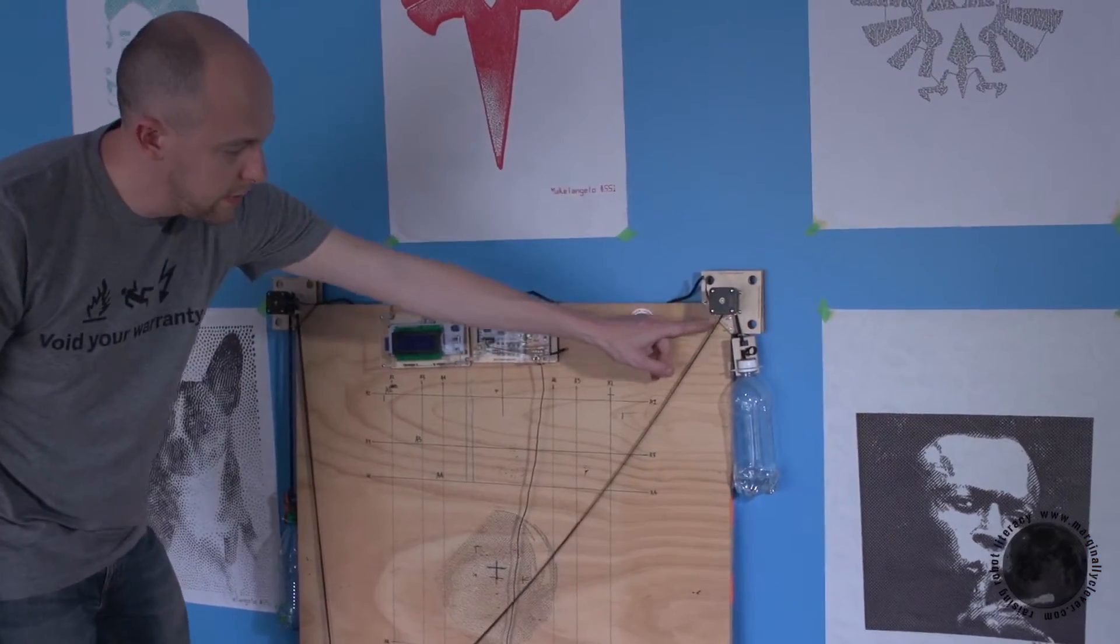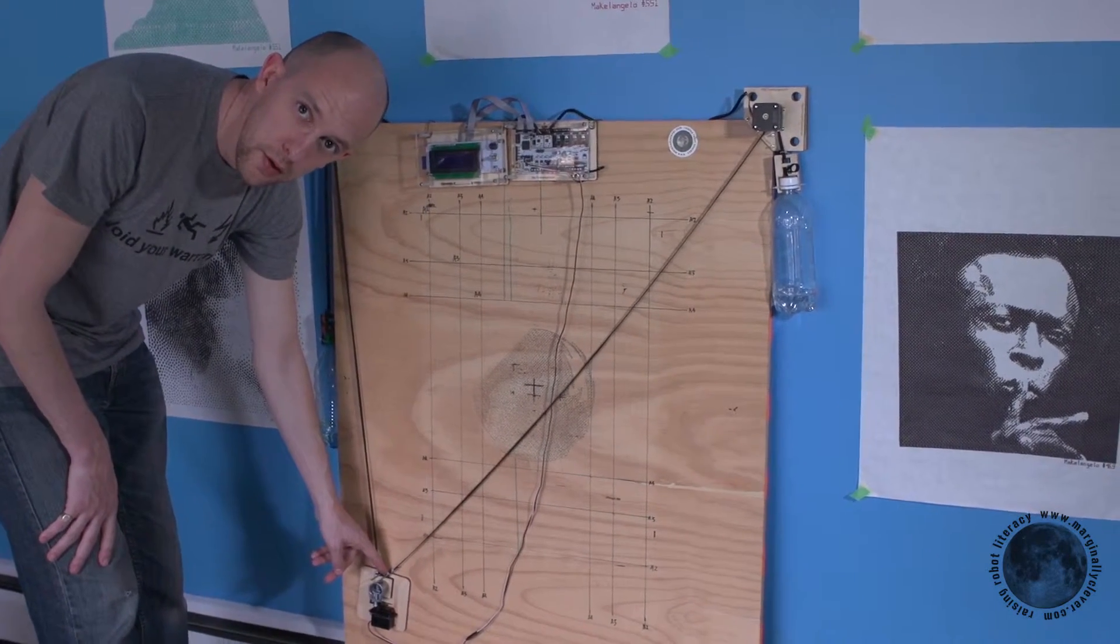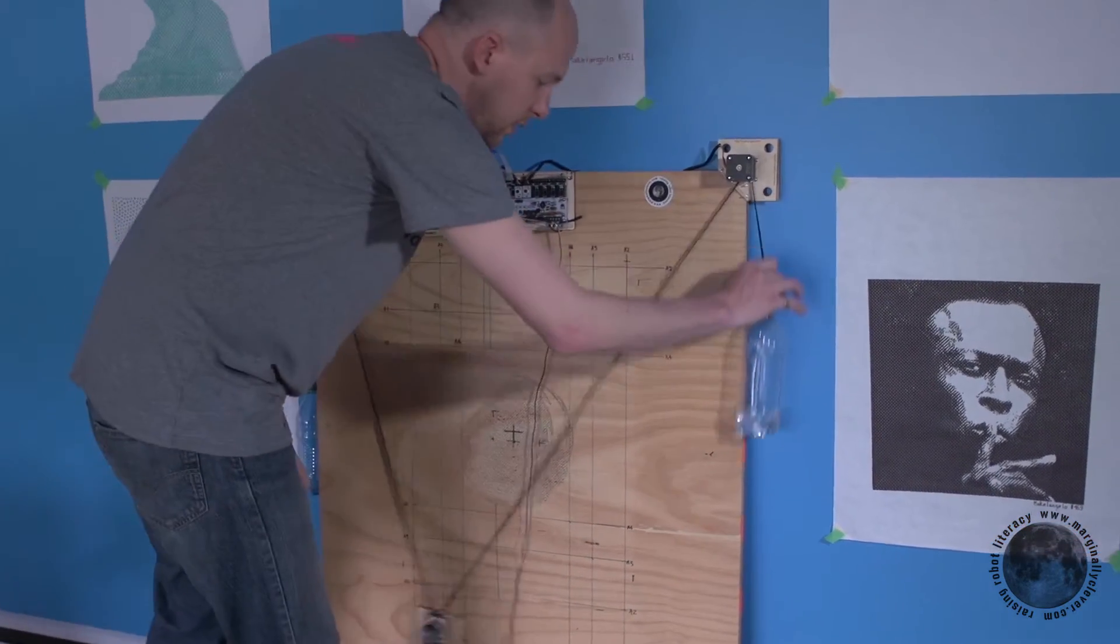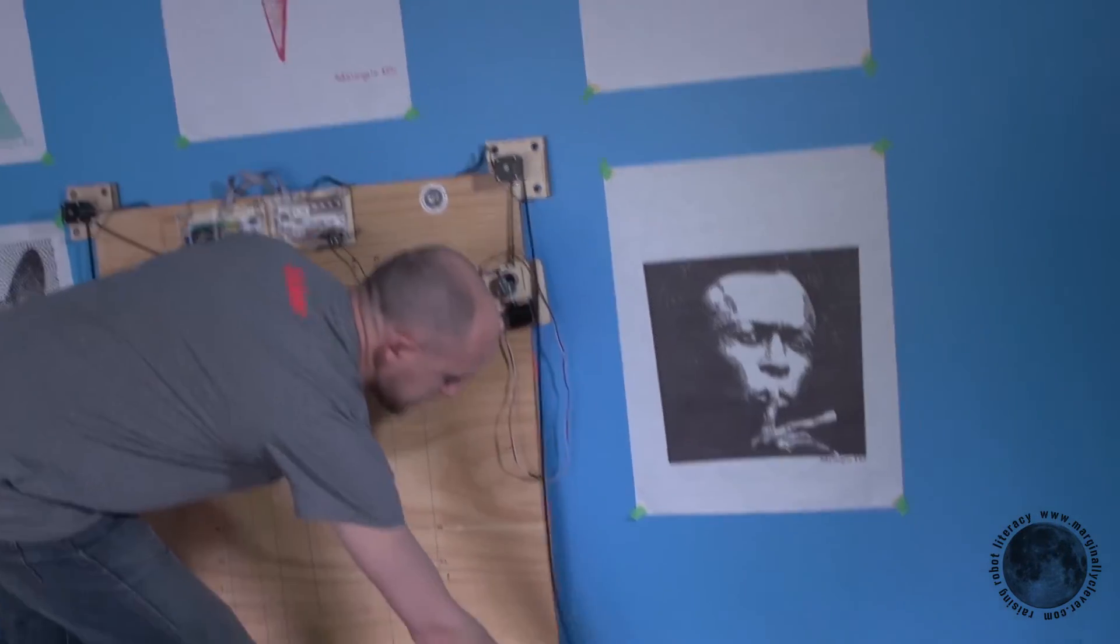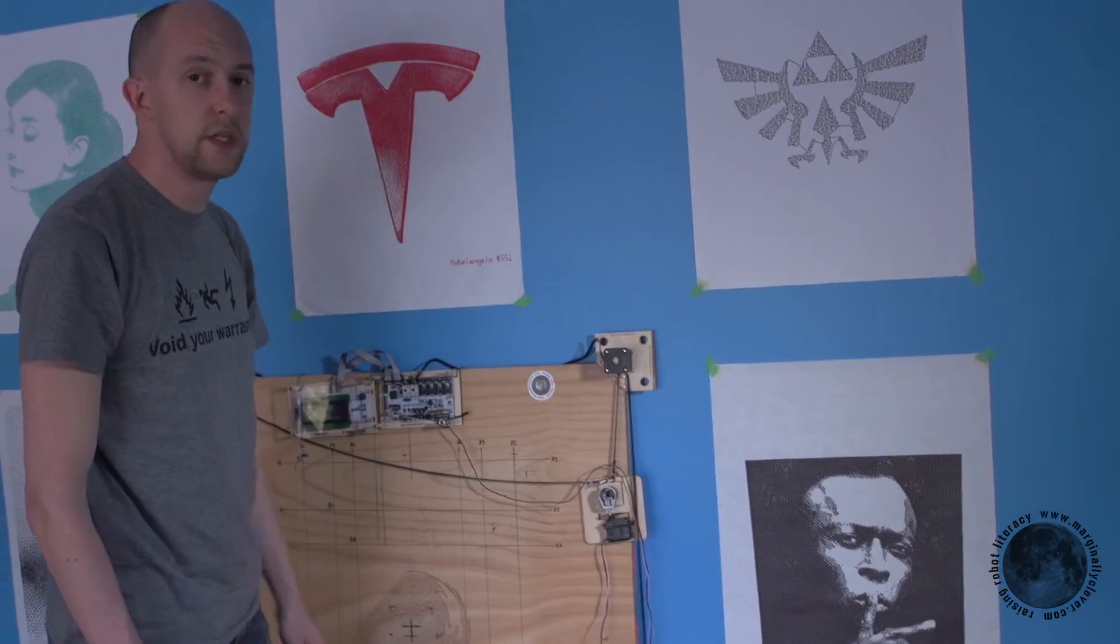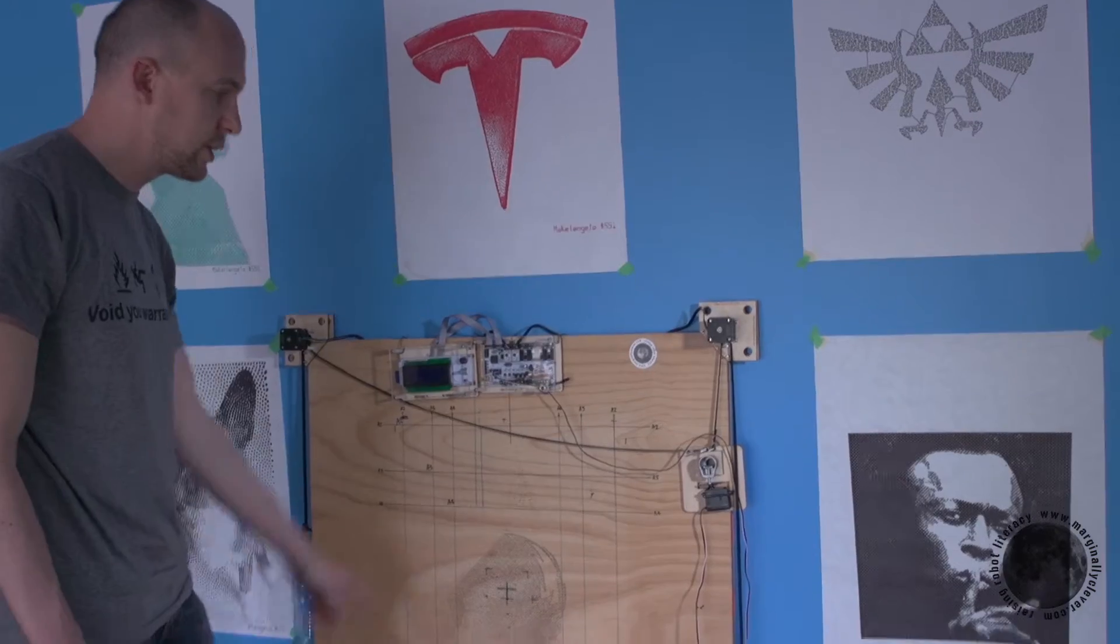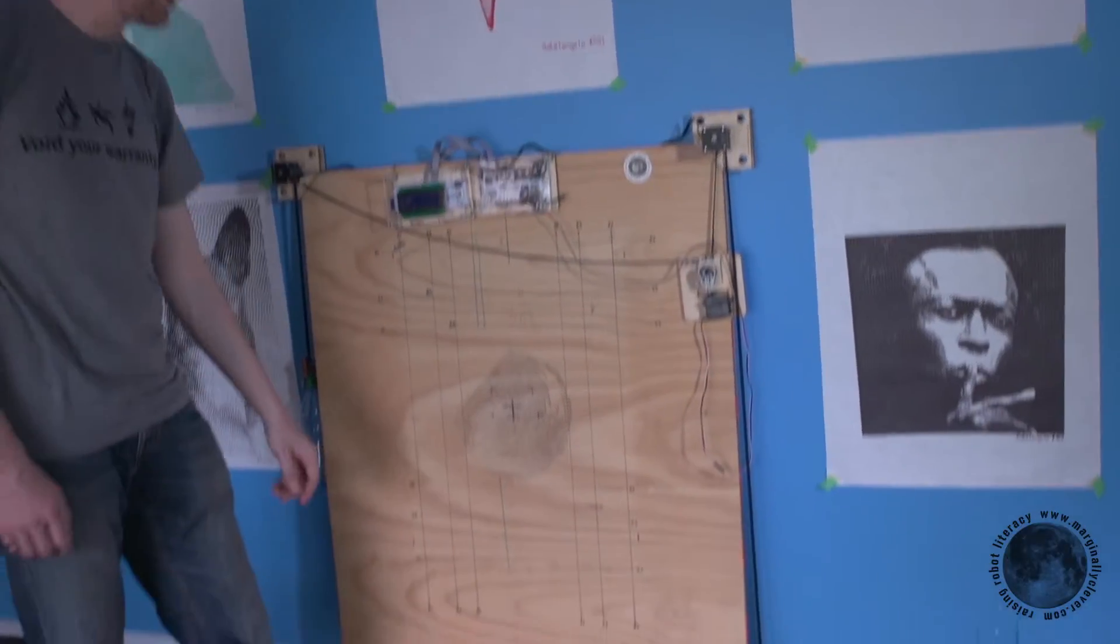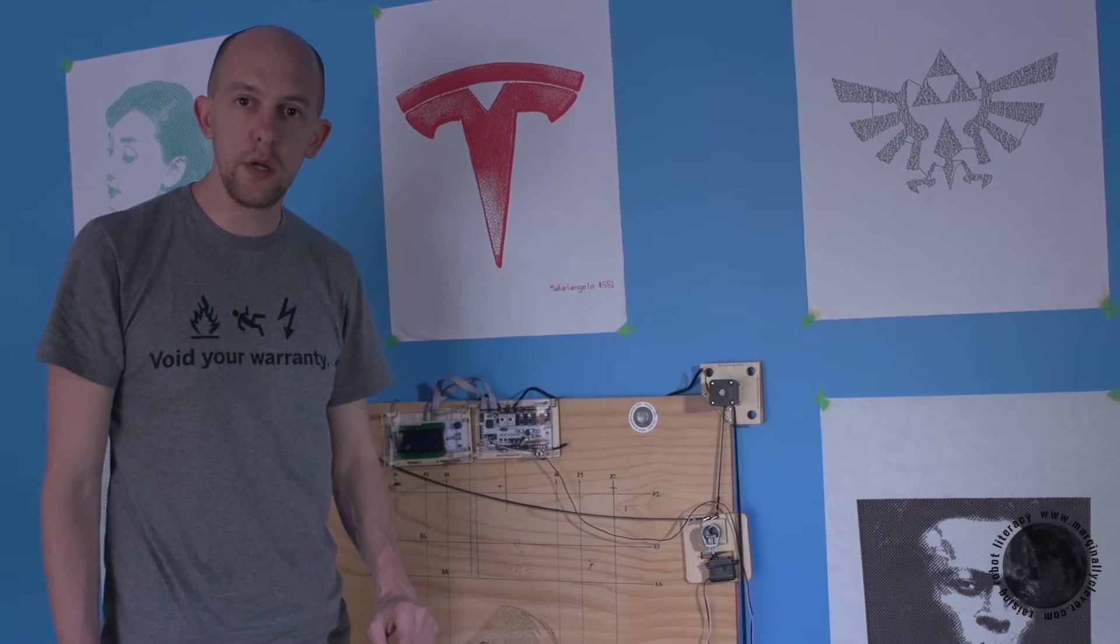When this bottle is at the top, that is the lowest point you can reach with your pen holder. When this bottle is on the floor, that is as high as you can reach with your pen holder. These are the two corners that distance from one end to the other, plus whatever this extra is, that's how long your belt needs to be.